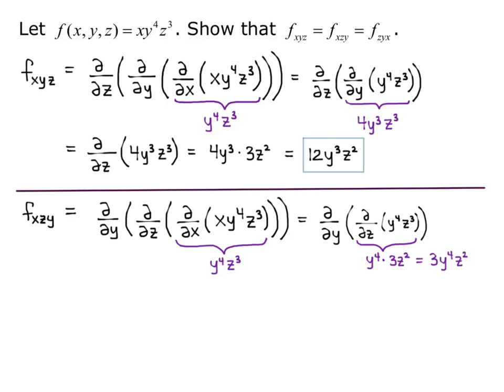Now the only thing left is to take the partial derivative with respect to y of 3y⁴z². With respect to y, bring down the 4 and decrease the exponent by 1, giving 12y cubed z squared. So we've shown these two are equal. I'll leave the last one — f_zyx — to you. Remember: do z first, y second, x last, so x is the outermost partial derivative. You should end up with 12y cubed z squared.